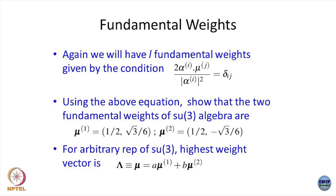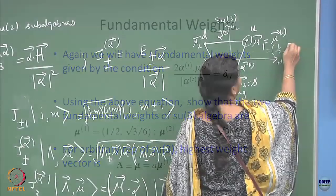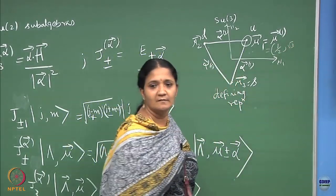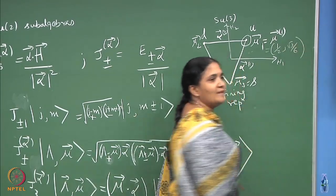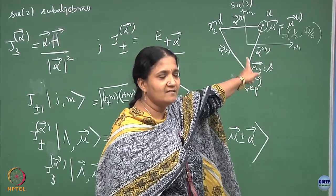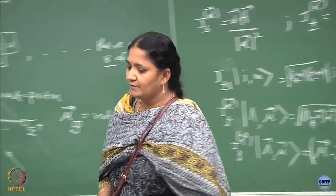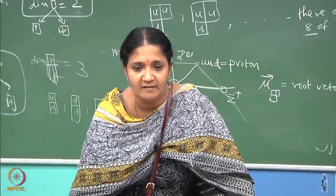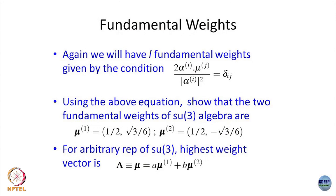It turns out that the first fundamental weight is the highest weight — we worked this out last time — and this turns out to be (1/2, √3/6) in the normalizations of these Gell-Mann matrices. This was the highest weight, that is one option for the fundamental weight, and then you can find the other option which is (1/2, 1, −√3/6).